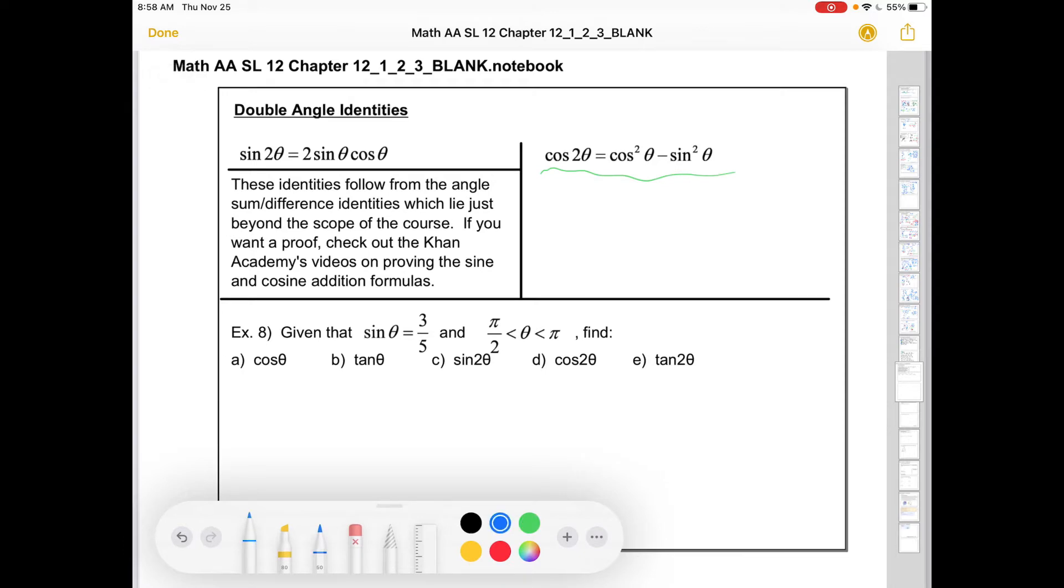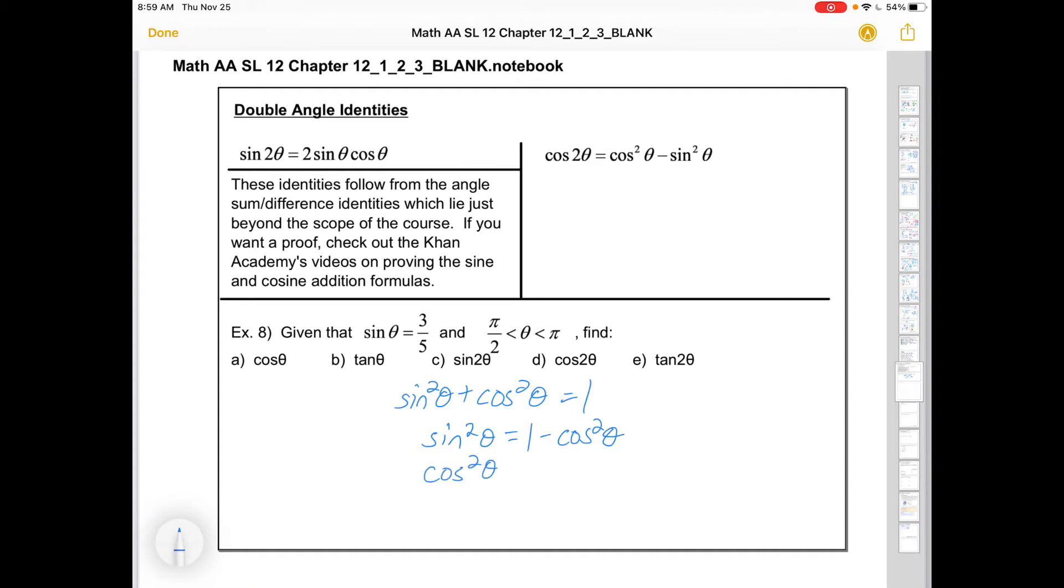The Pythagorean identity is sin² θ + cos² θ = 1. That's different from what's underlined in green up there. So what we get from the Pythagorean identity is a couple of ways to rearrange that cos 2θ formula. Because from the Pythagorean identity, we can rearrange it and say, oh, sin² θ is just 1 - cos² θ. If we get cos² θ on its own, that's just 1 - sin² θ.